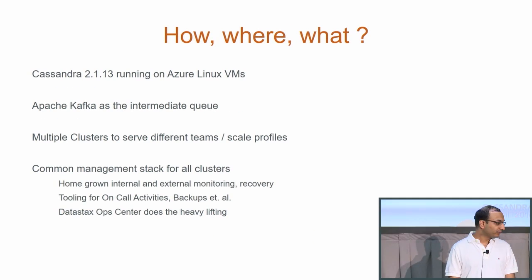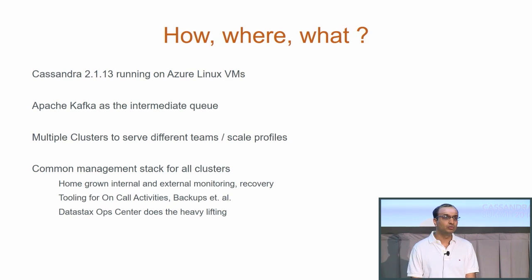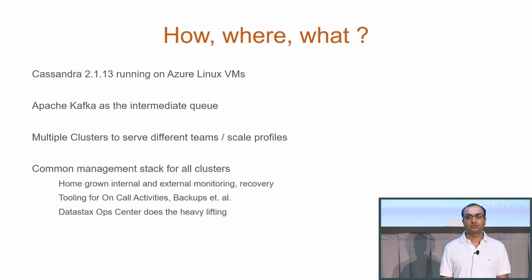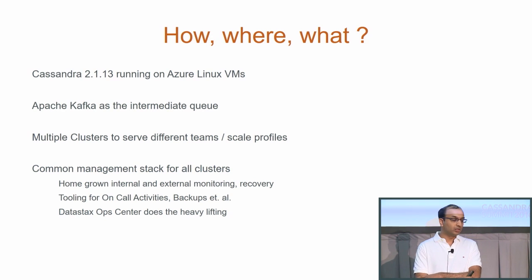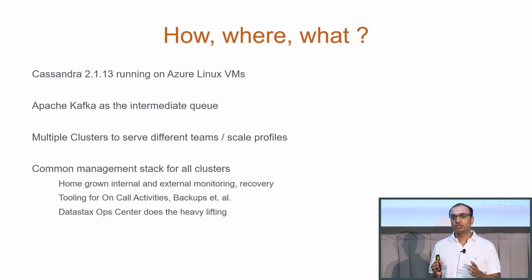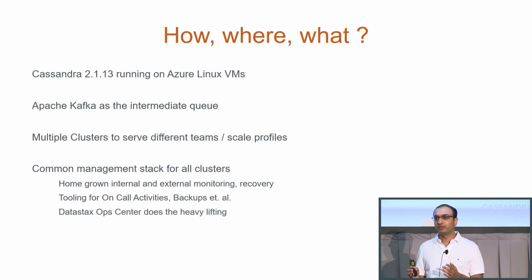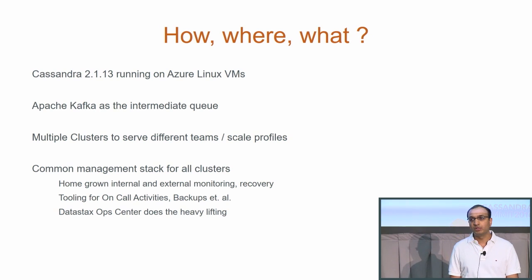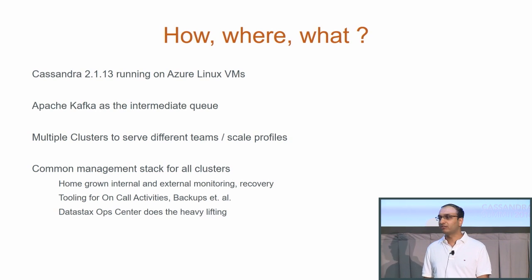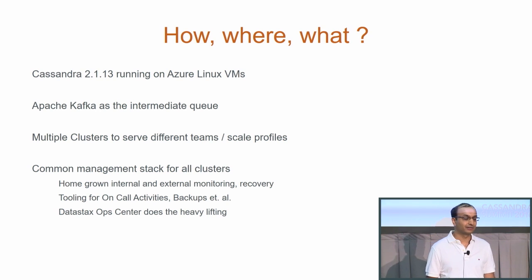What we did was we built Cassandra clusters using version 2.1.13, running on Azure Linux VMs. We used Kafka as the intermediate queue. We built multiple clusters to serve the needs of different teams and different scale sets, and we have built a common management stack for all of these clusters.